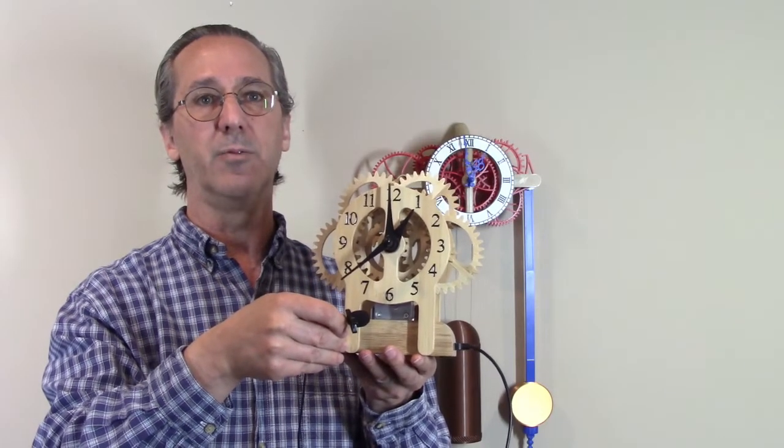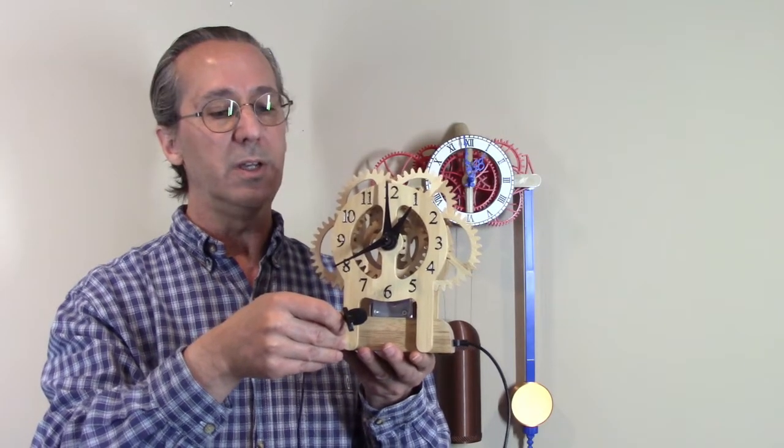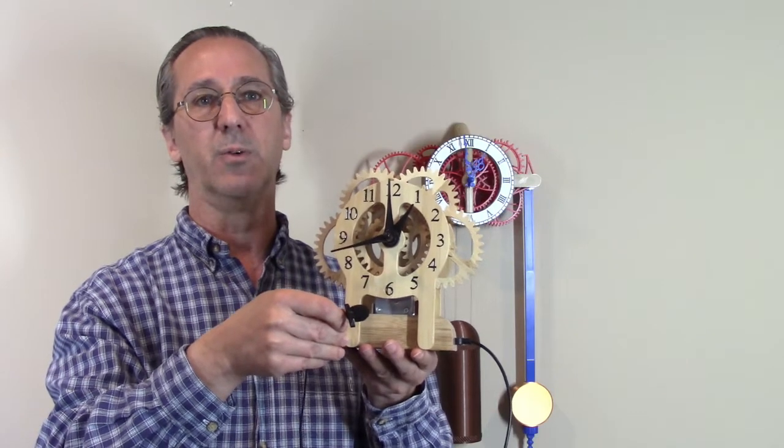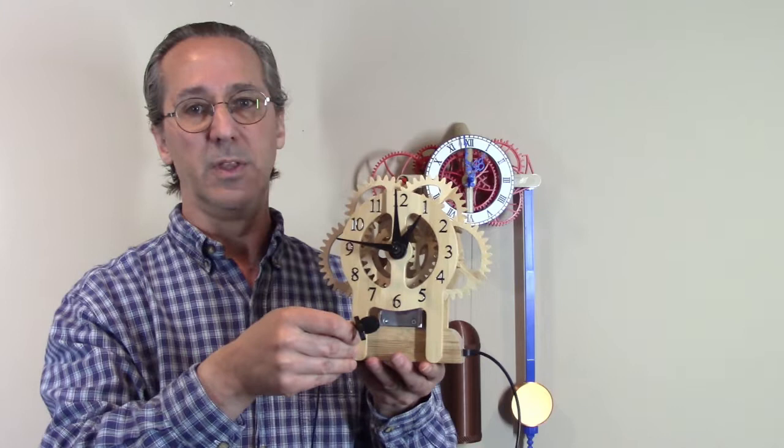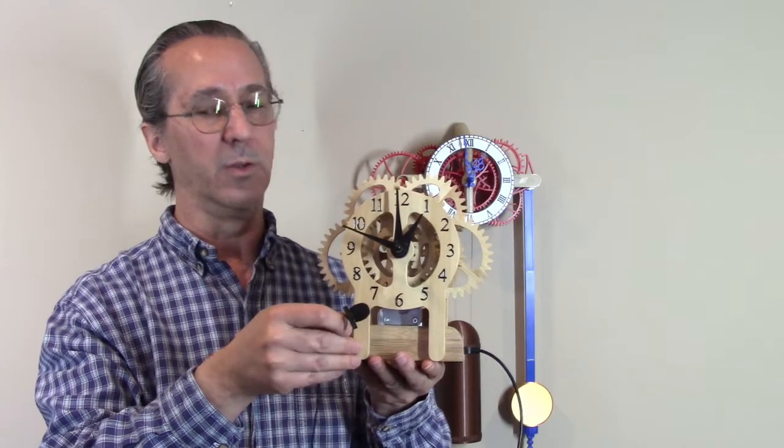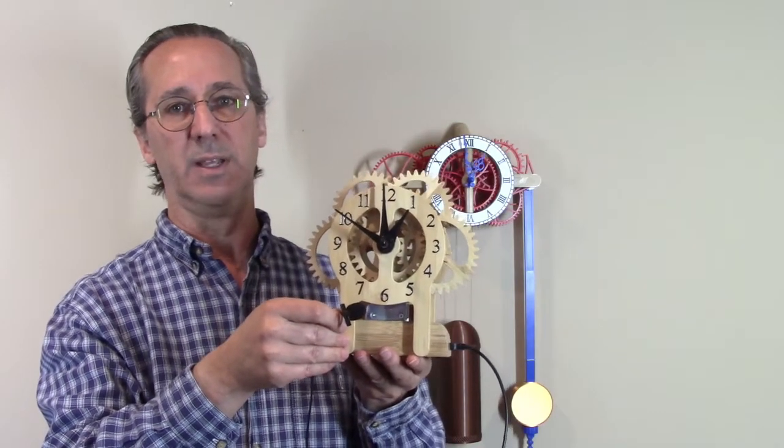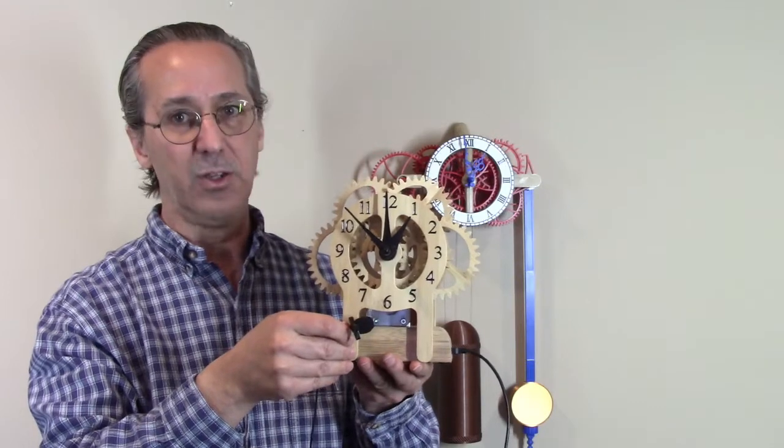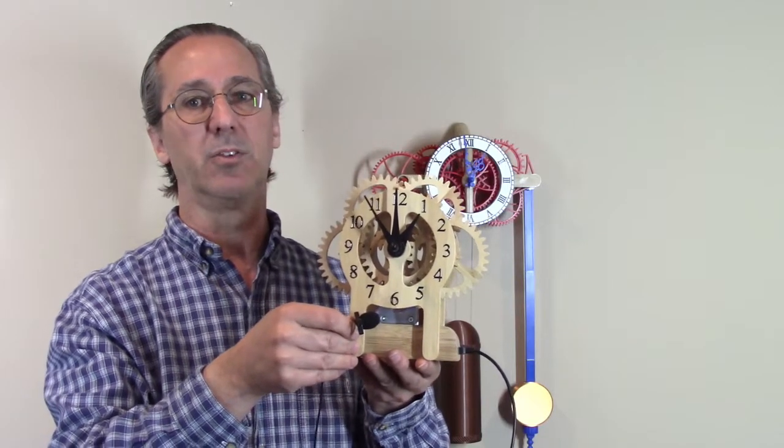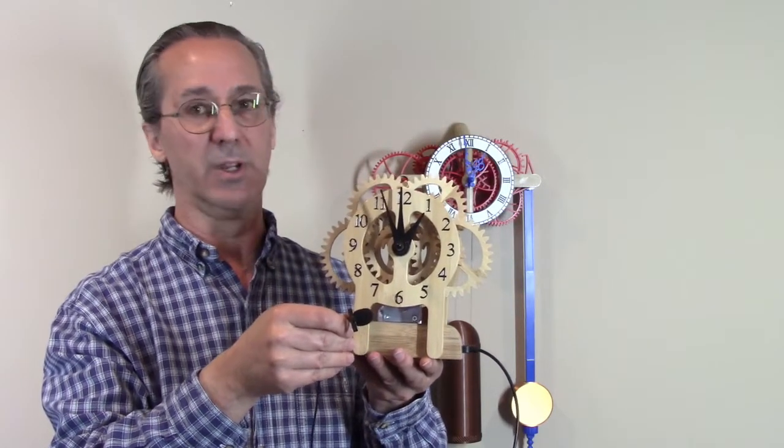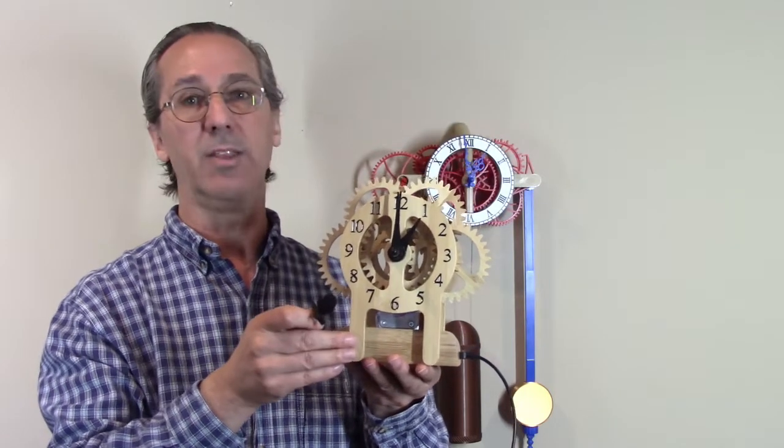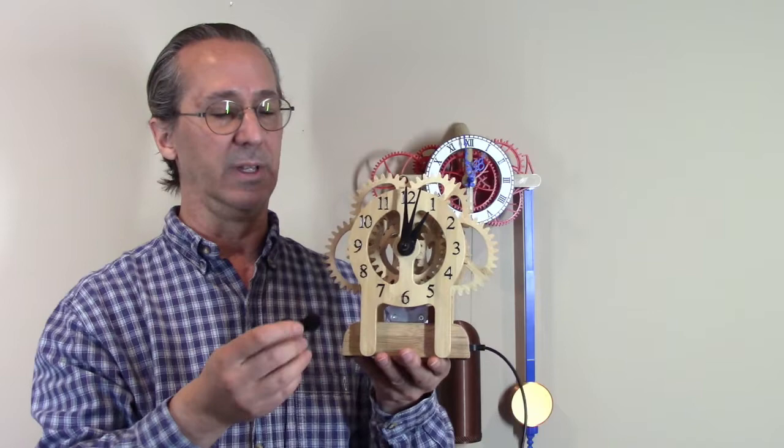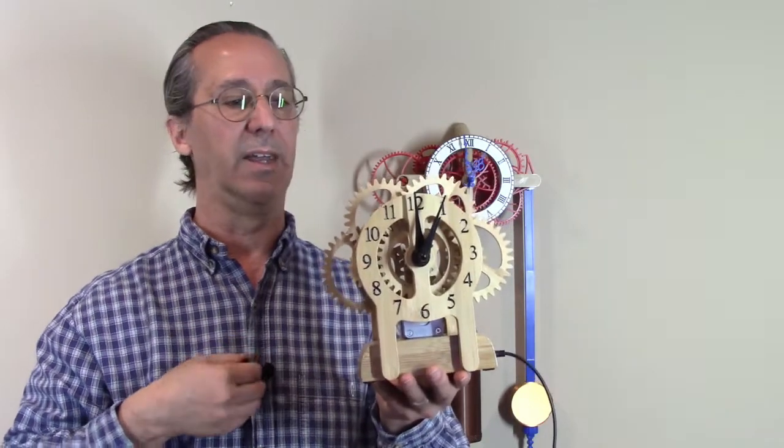The PLA version of this clock, you can hear that from five or six feet away. It's a gentle whirring sound, but this wooden version, the wood really seems to dampen the noise. And you have to get within six to 12 inches away from this before you can hear any kind of noise coming from this clock. So I think I'm really going to like building this similar design out of wood.